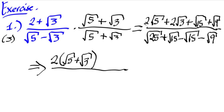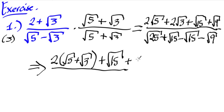So what we have is two times the quantity of square root of five plus square root of three. Then we still have plus square root of 15, and square root of nine is just three, so that gives us plus three. That's our numerator.